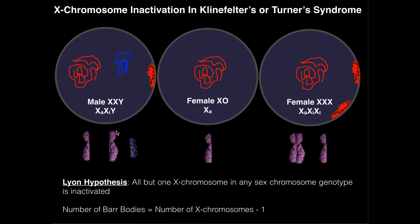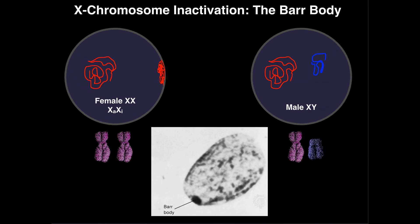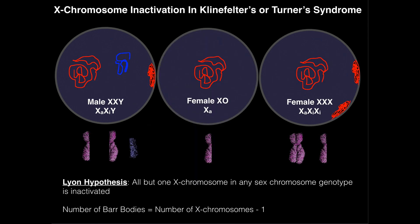In a normal female, their sex chromosome genotype would be XX, and in a male, they would be XY. In females who normally have two X chromosomes, one of those chromosomes is inactivated, meaning the female only requires one active X chromosome — designated X subscript A, which means active. The other is inactivated, designated X sub I, and the inactive X chromosome is often termed a Barr body.